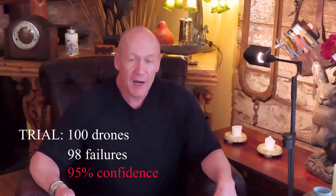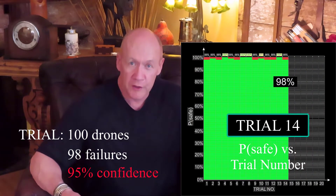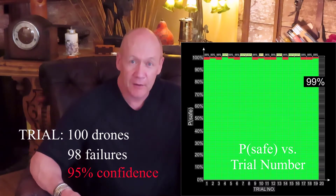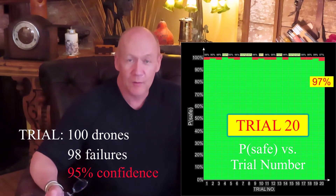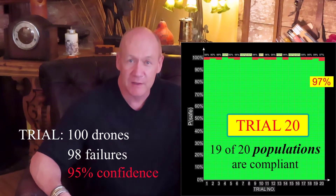What that means is: suppose we consider a trial where 100 drones are sent to attack the ship — 98 of those must fail, allowing no more than two to be successful. The 95% confidence part means that if we repeat this experiment of 100 drones 20 times, in 19 of those 20 trials no more than two drones can get through. On the 20th trial, we allow something more than two to get through — that's what 95% confidence means.